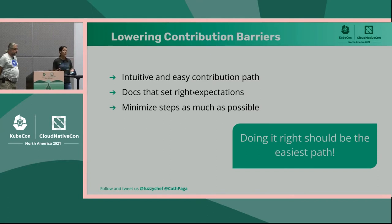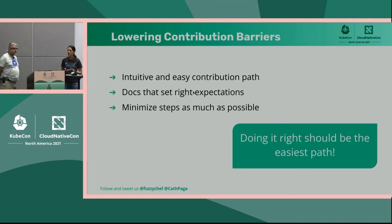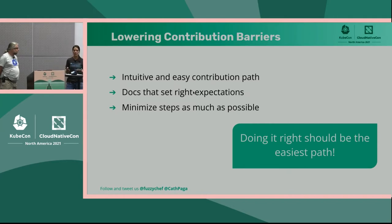Documentation ties into clear communication: clearly communicate what contributors should do and what to expect when submitting a PR. That will smooth the whole process. It's also important to minimize steps — be really clear about development requirements, point them to the right tooling so they're not looking around, and leverage tools to reduce steps as much as possible. There are a lot of tools that allow you to automate things. If it can be automated, your contributor shouldn't be doing it manually.